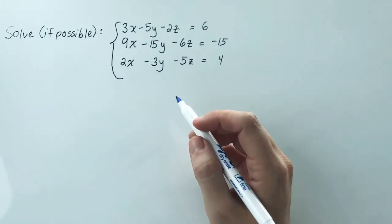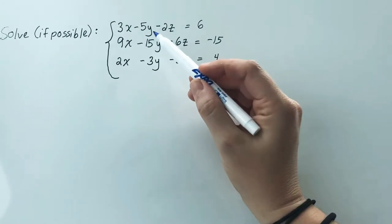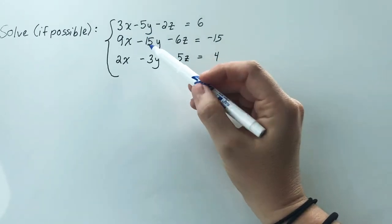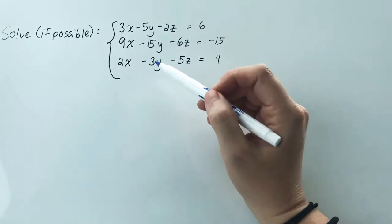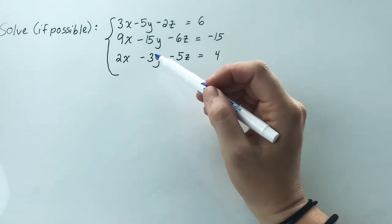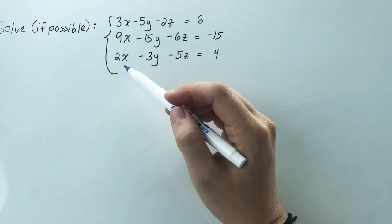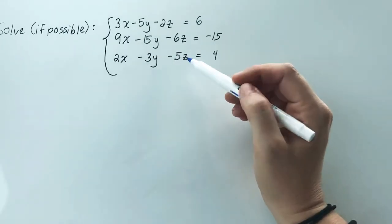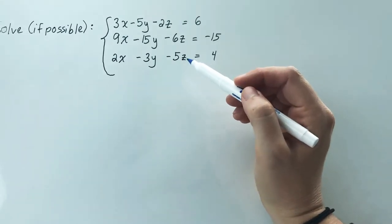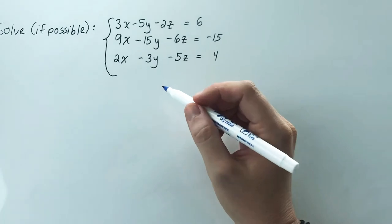If you chose to be a little clever here and eliminate y, because I noticed that negative 5, negative 15, and 3 all are very easy to get a least common multiple, that might be the fastest way to do this problem. You could have also eliminated x or eliminated z, but those would have taken a little bit more work. So I would recommend here choosing to eliminate y.